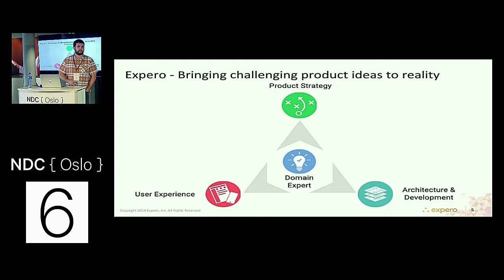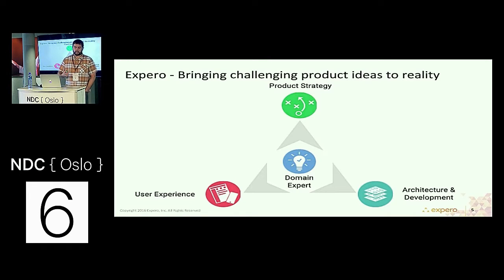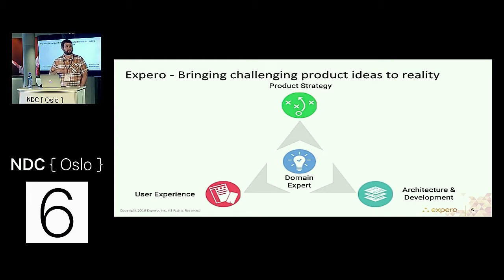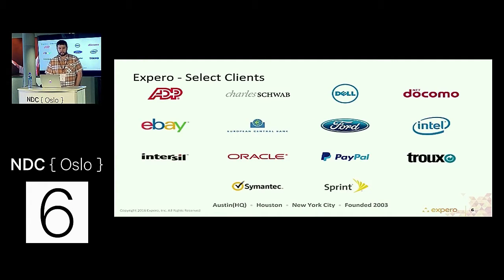I work for a company called Xperro. What we do is we solve problems in complex domains, specifically around big data, IoT, and high-performance computing, across a variety of industries such as financial services, oil and gas, and manufacturing. My company is broken up into three separate practices: an architecture and development practice where we actually build the stuff, a user experience practice which figures out workflows and how to show complex data in a simple way, and a product strategy practice where they figure out prioritization and how to get this out to the customer base quickest.